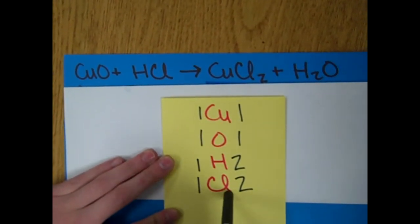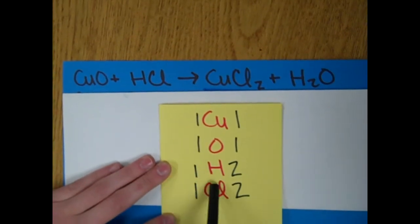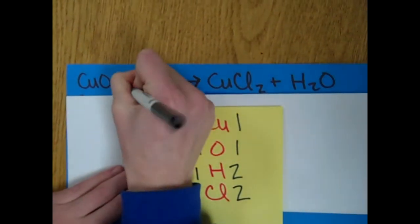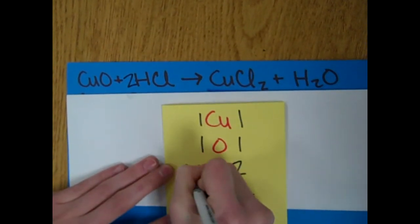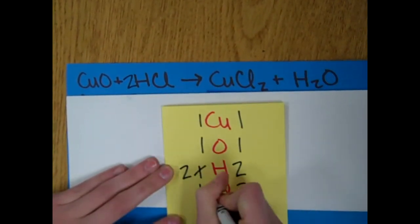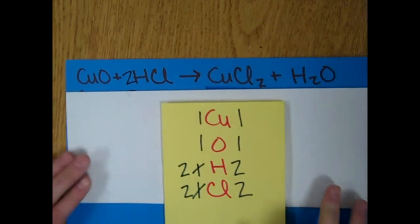the hydrogen and the chloride are not equal, so we can start with hydrogen. We need to have two on that side, which changes there to be two hydrogens and also two chlorides. So, now the equation is balanced.